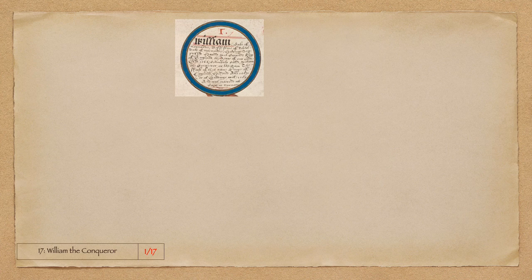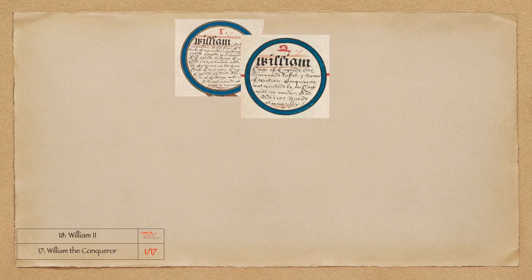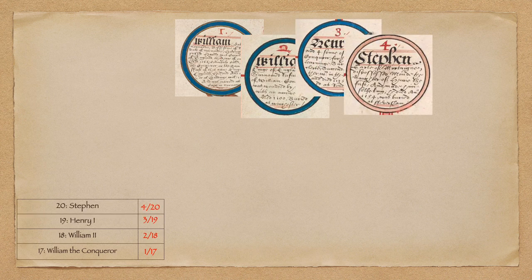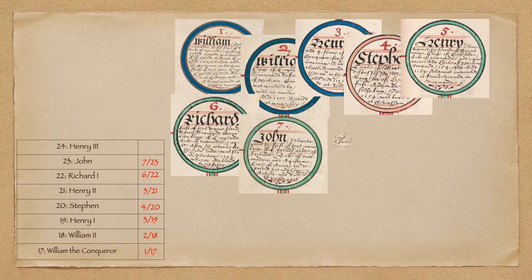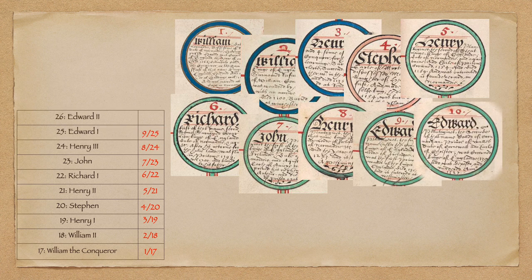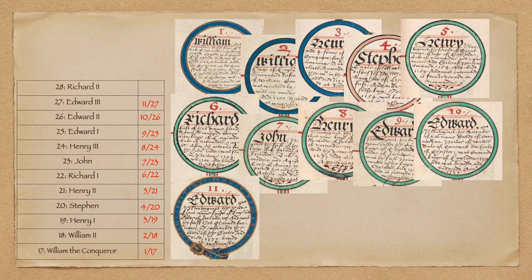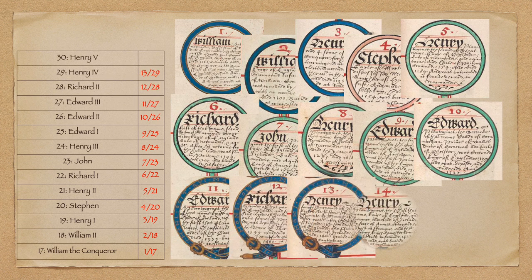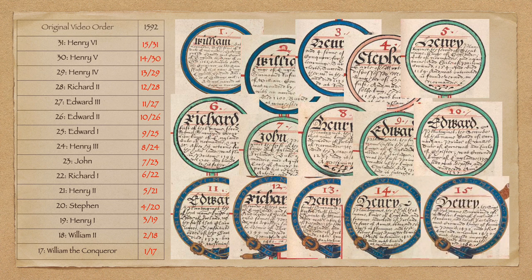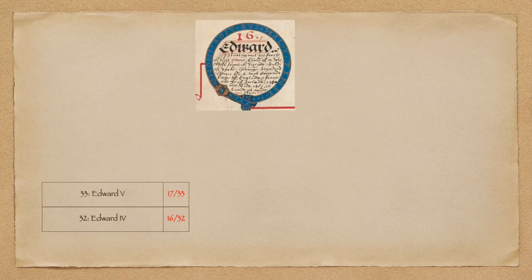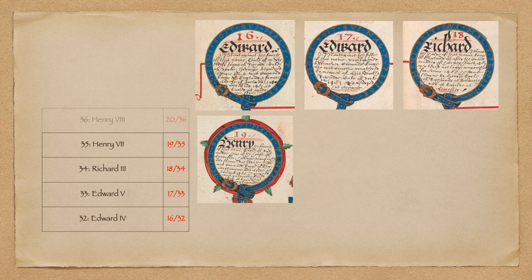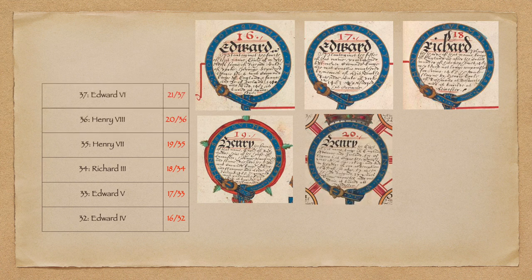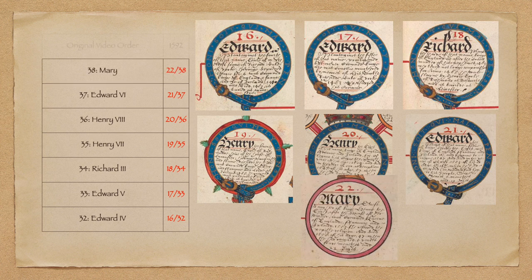The second Norman monarch, or 18th in the genealogy for Francis Bacon, is William II. Then follows Henry I, Stephen, Henry II, Richard I, John, Henry III, Edward I, Edward II, Edward III, Richard II, Henry IV, Henry V, and Henry VI. Then we have Edward IV, Edward V, Richard III, Henry VII, Henry VIII, Edward VI, and Mary as the 22nd from William the Conqueror and the 38th overall in the Morgan Coleman genealogy made in 1592 for Francis Bacon.